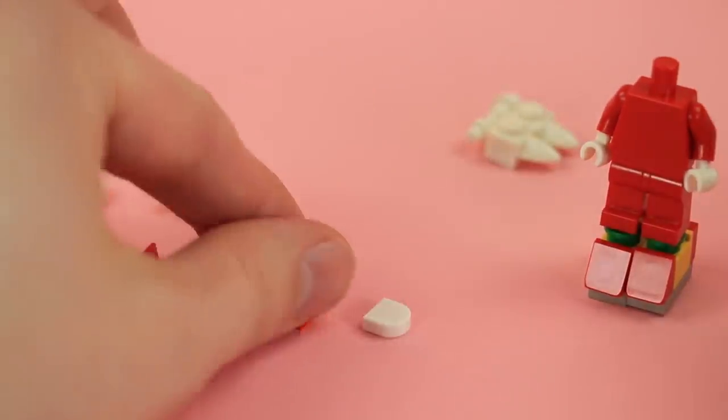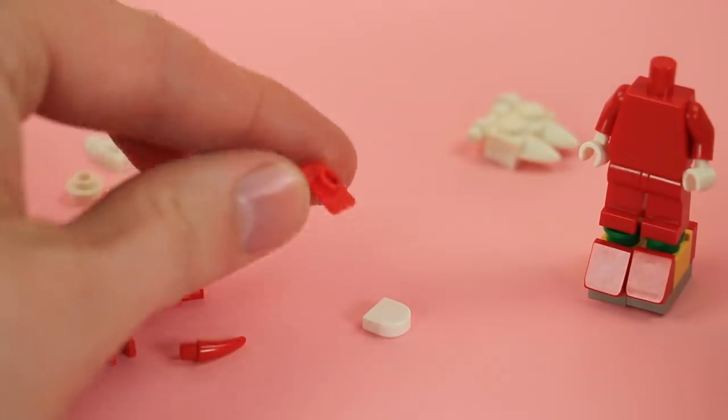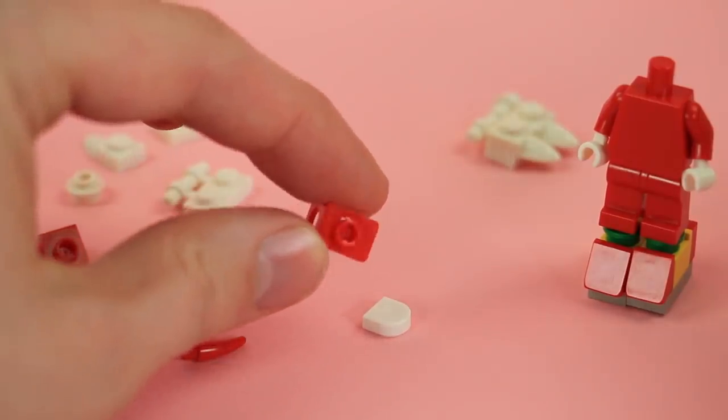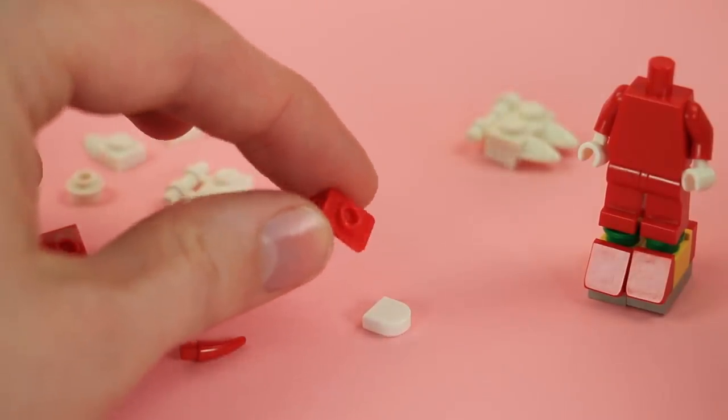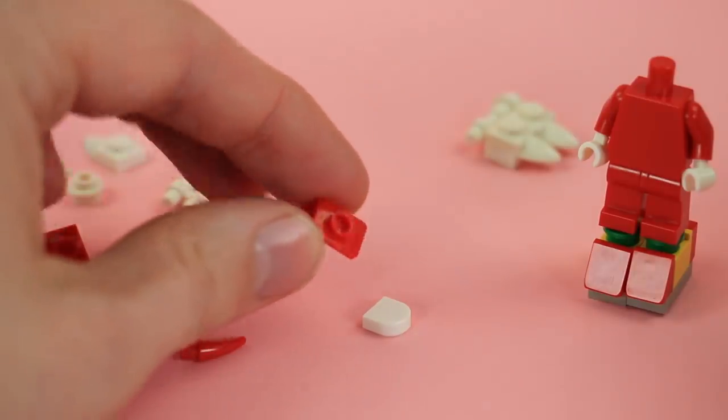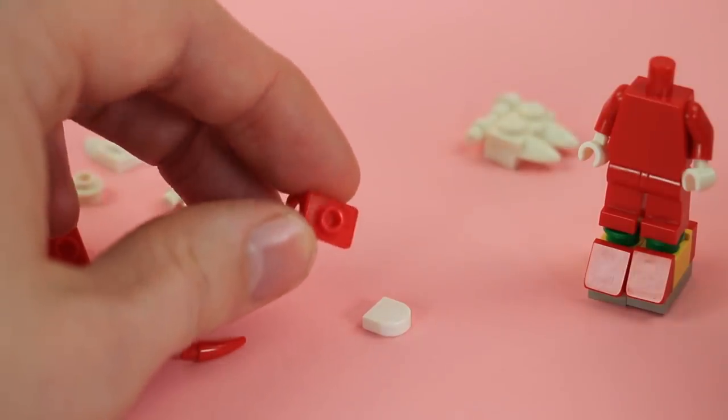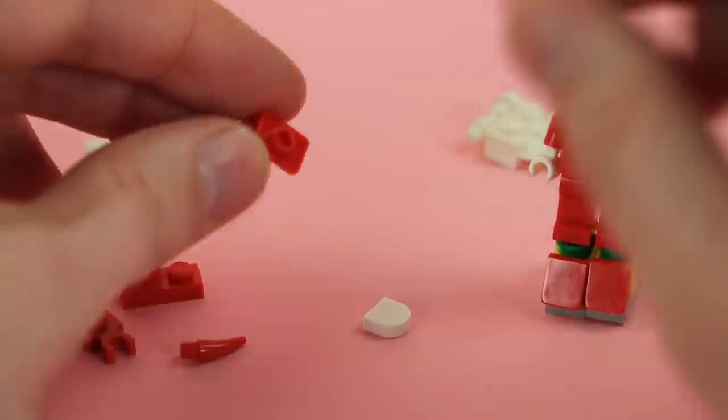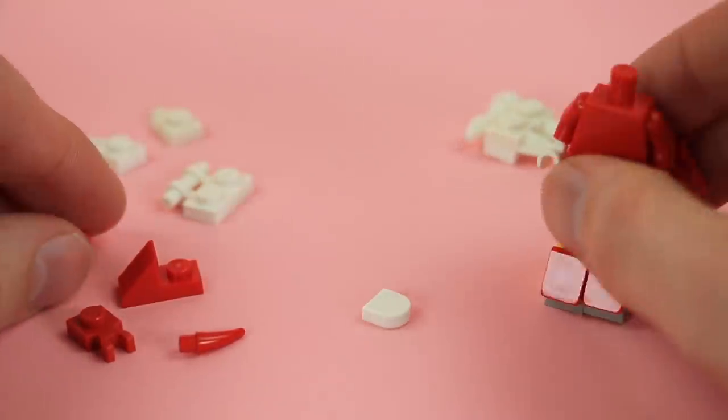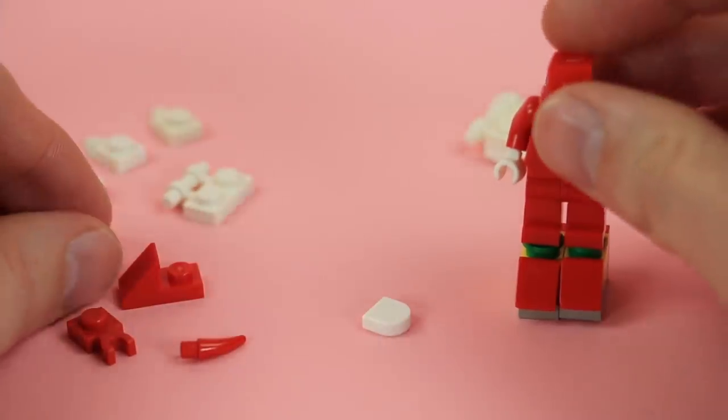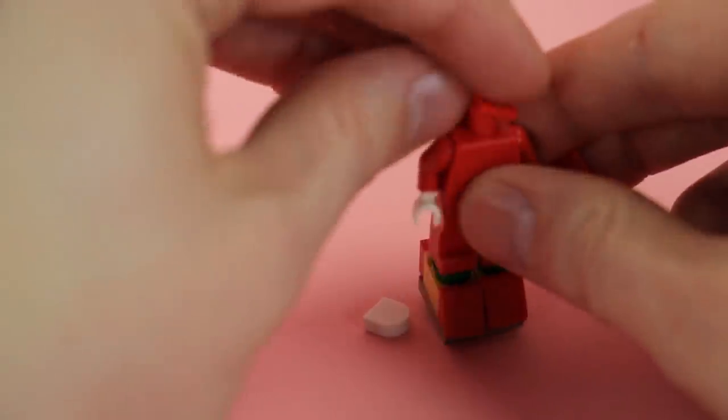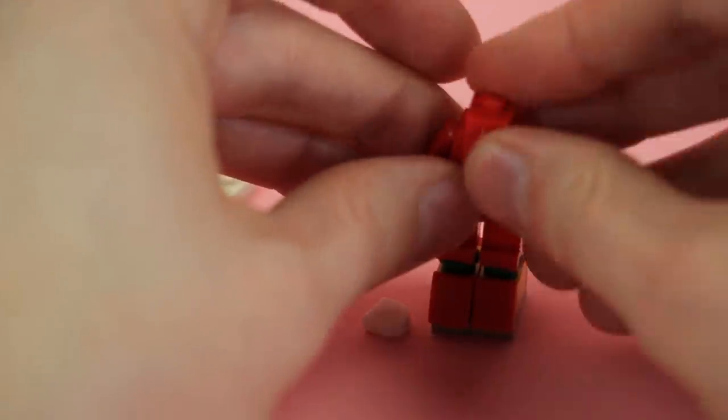Now this piece I'm using here, a red neck bracket, is pretty rare. I don't believe it's come in a lot of sets, but I collect neck brackets as much as I can because I love them so much. But you could use a white one or a light gray one. It'll be mostly covered up. So one will go on backwards, the other one will go on forwards.